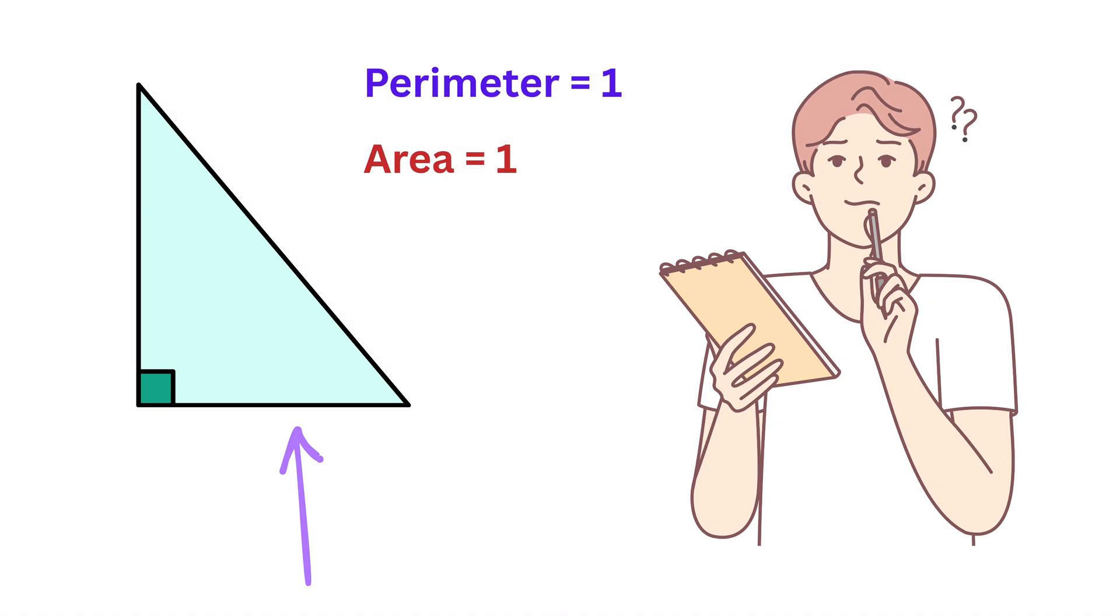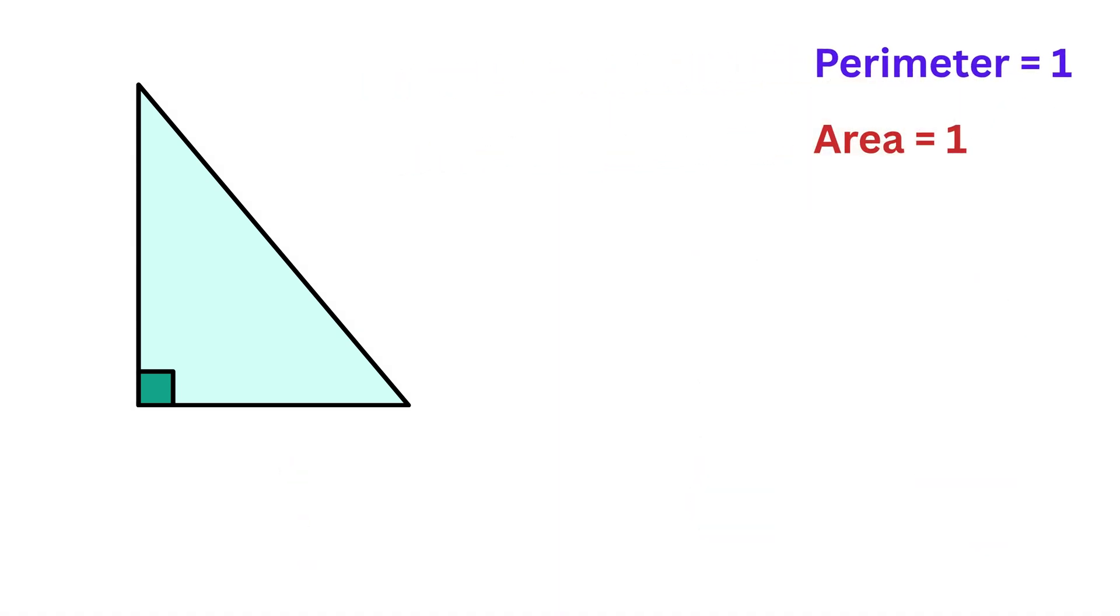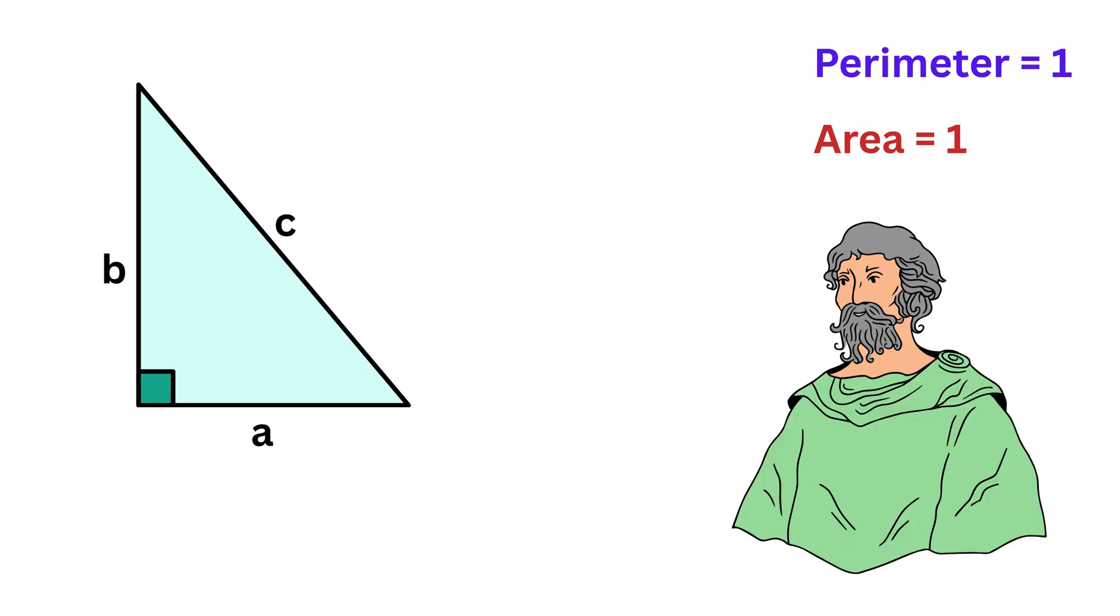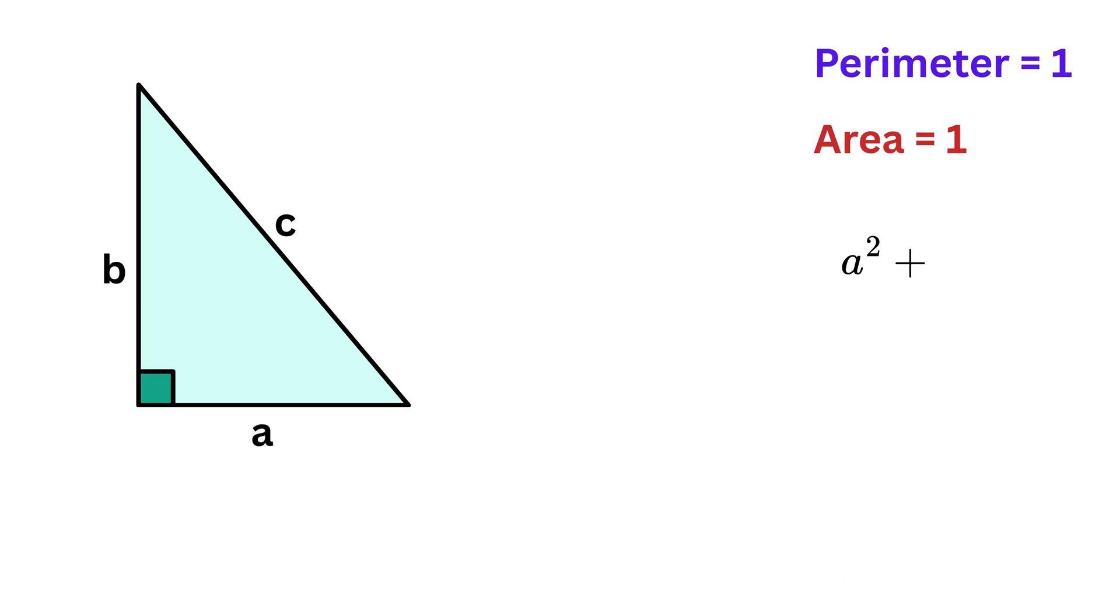Assume we have a right-angled triangle where the two shorter sides are labeled as A and B, and the longest side, which is the hypotenuse, is labeled as C. Since the triangle is right-angled, we know from the Pythagoras theorem that A squared plus B squared is equal to C squared.